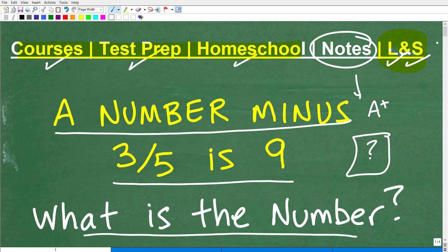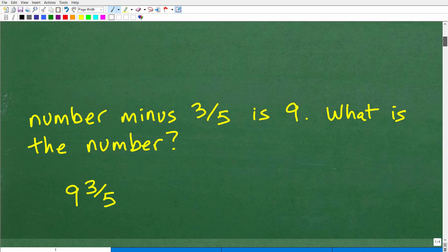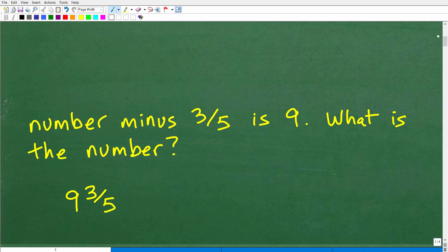So a number minus three-fifths is nine. What is the number? I think some of you that are looking at this are going, 'oh, this looks like we might have to do some algebra to solve this problem.' Well, it doesn't have to be that complex. But let's take a look at the answer. So a number minus three-fifths is nine. What is the number? That number is nine and three-fifths.